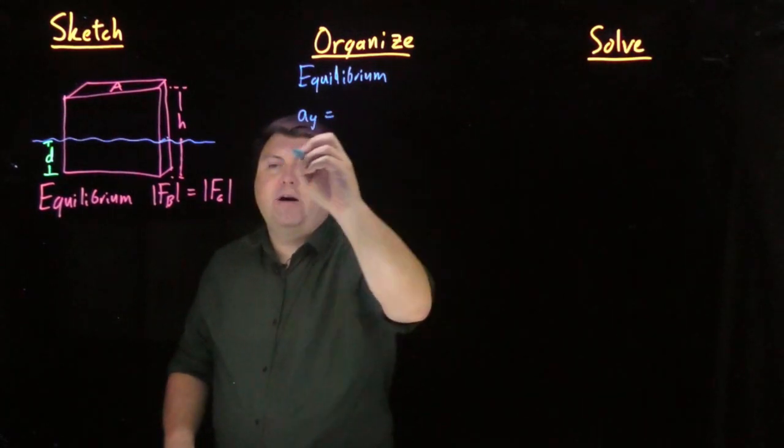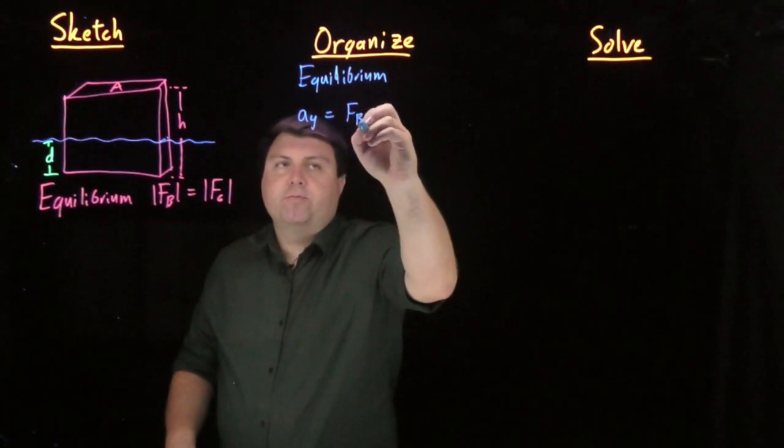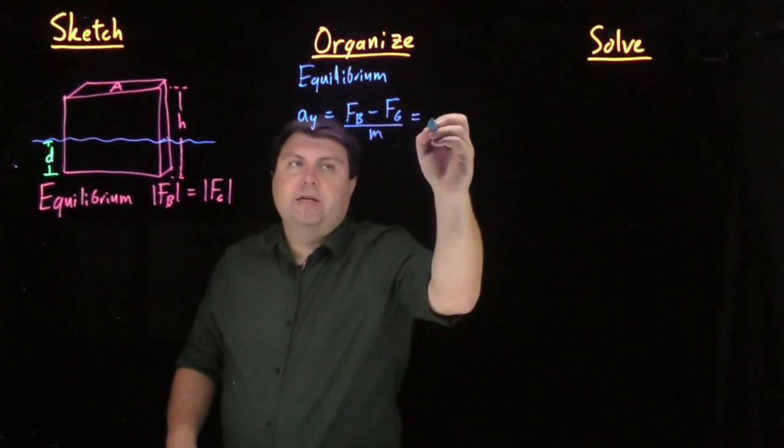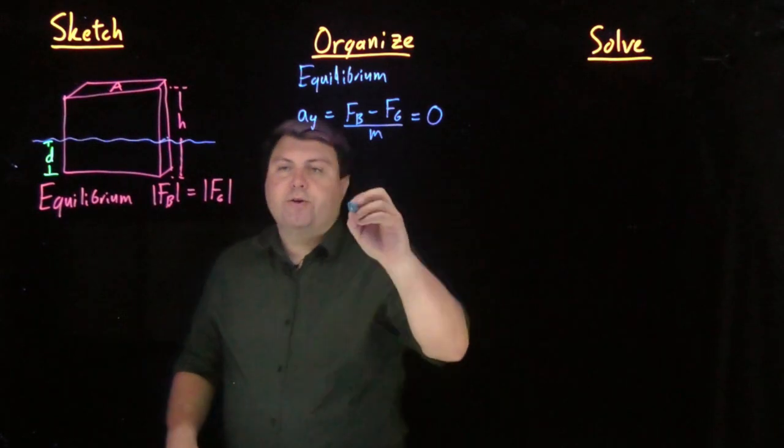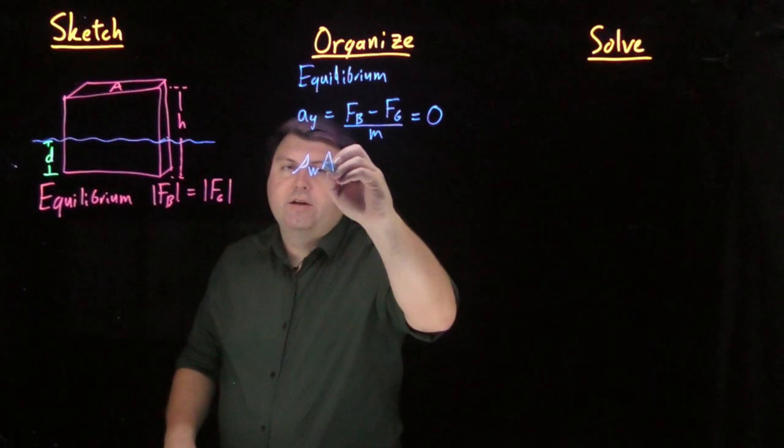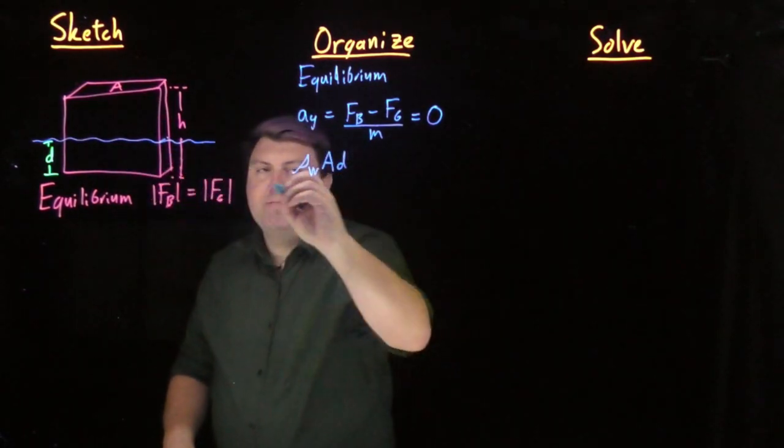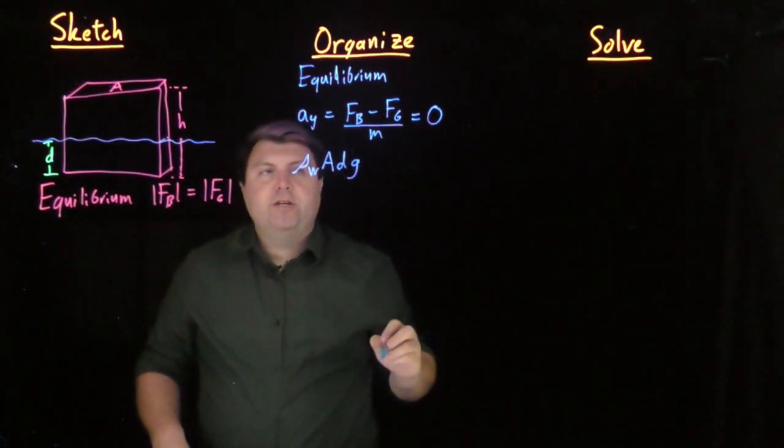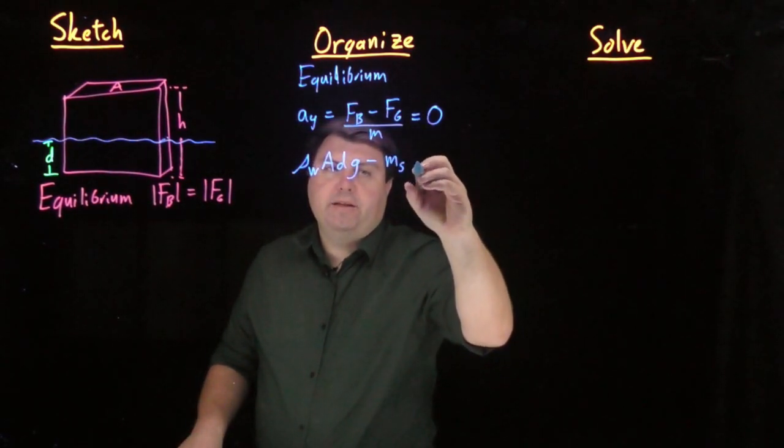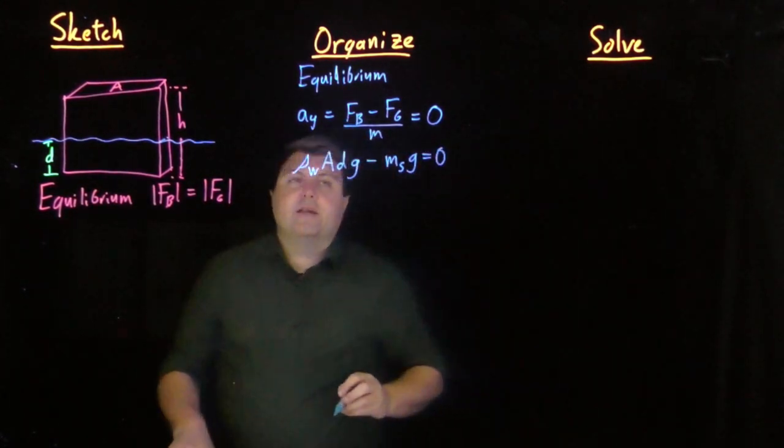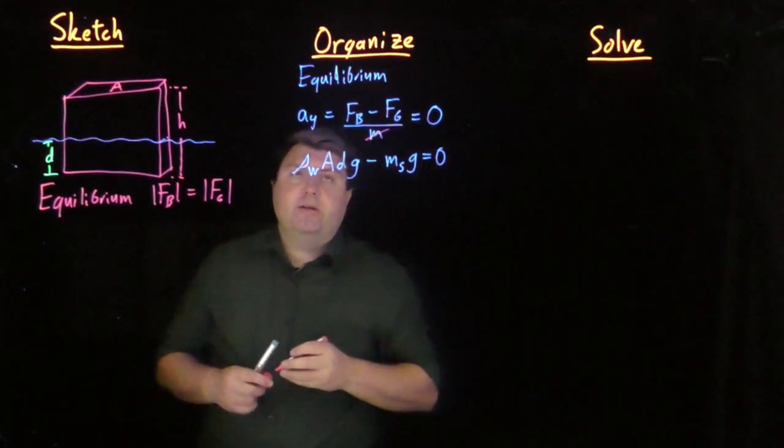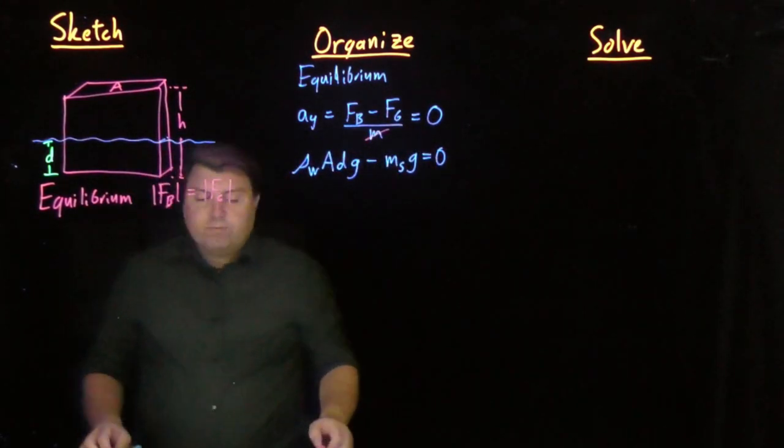Our acceleration in the y is equal to our force of buoyancy minus the force of gravity over the mass. If it's in equilibrium, all this is equal to zero. So our force of buoyancy is going to be the density of the water times the area times this depth times g, minus our force of gravity, which is the mass of the styrofoam entirely times g. And these forces will be zero because we can of course cancel out this mass up here.